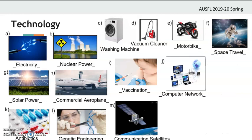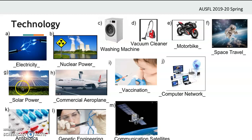Here are the answers. Let's have a look at the pronunciation — repeat the words as we go. Electricity, nuclear power, washing machine, vacuum cleaner, motorbike, space travel, solar power, commercial aeroplane.